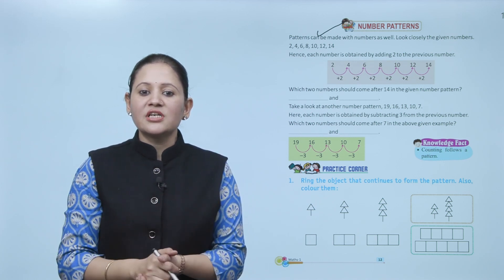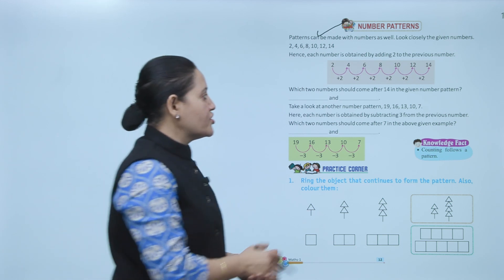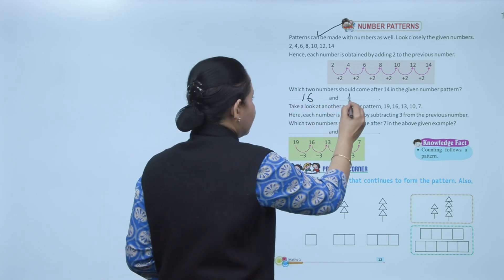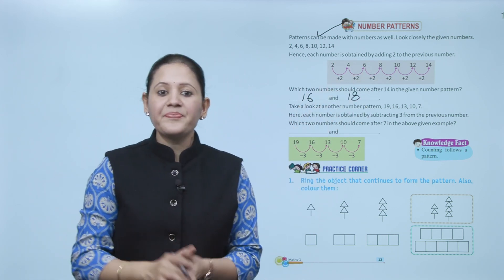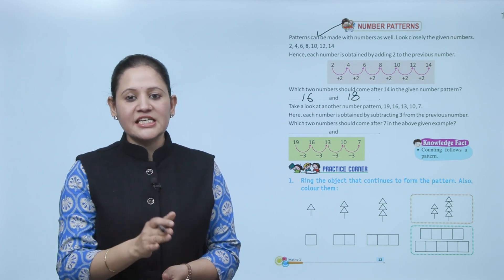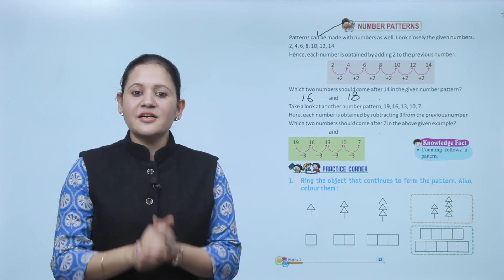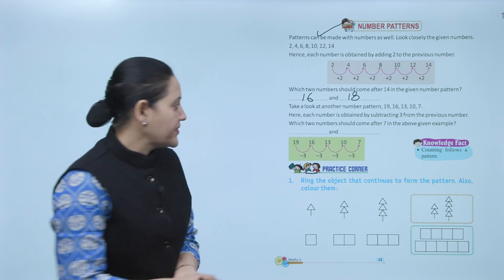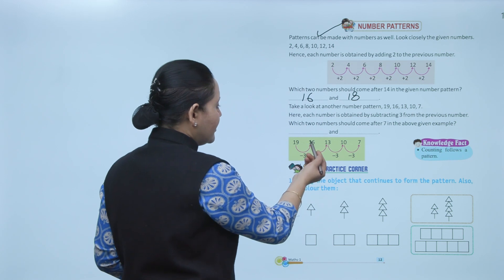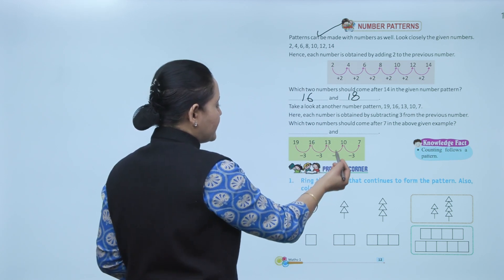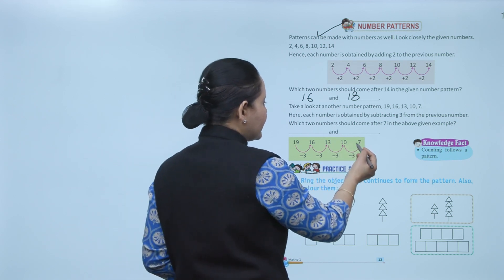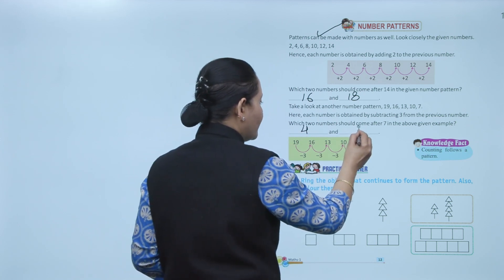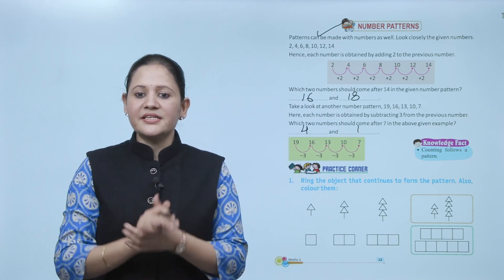Which two numbers should come after 14? If we add 2 to 14 we get 16, and if we add 2 to 16 we get 18. Another number pattern: 19, 16, 13, 10, 7 — each number is obtained by subtracting 3 from the previous number. Which two numbers come after 7? Subtract 3 from 7 to get 4, then subtract 3 to get 1. Like this, a pair will make a pattern.